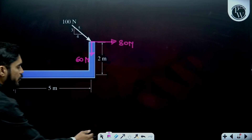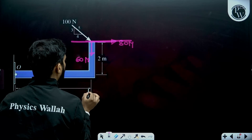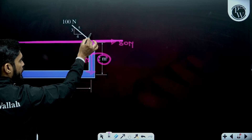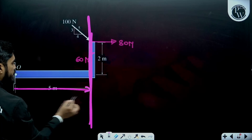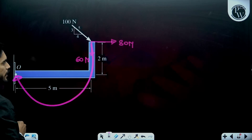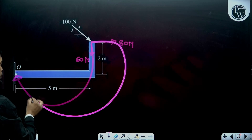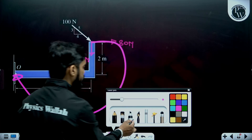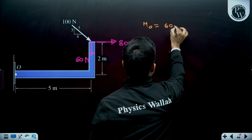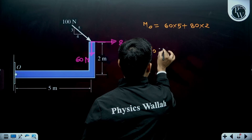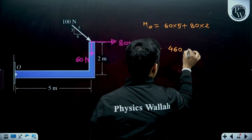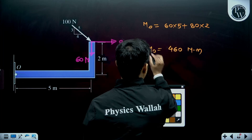Now I can easily calculate the moment about point O. The perpendicular distance of 80 Newton from O is 2 meters and the perpendicular distance of 60 Newton from O is 5 meters. Both 60 Newton and 80 Newton are applying clockwise moments about O, so considering clockwise as positive: net moment = 60 × 5 + 80 × 2 = 300 + 160 = 460 Newton meter, and this moment is clockwise.